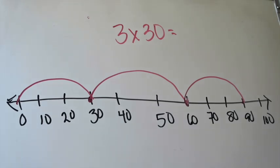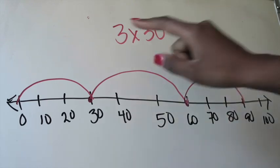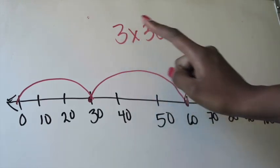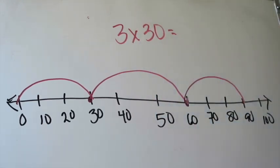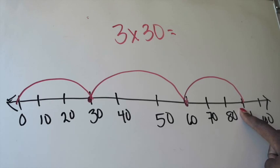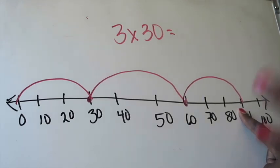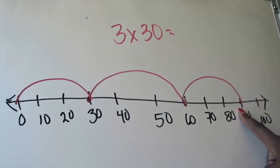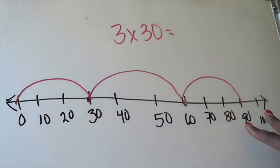Now to represent the answer, you're going to ask yourself, well, when I made those three jumps of 30 each, where did I end up? Where did I land on the number line? And you should see that you landed on the number 90, which is the exact same answer that we got when we chose to model our problem. So it's going to be 90.